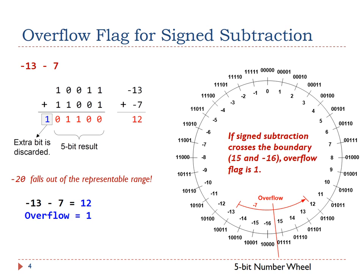As explained in the previous slide, adding two numbers of the same sign must produce a result of the same sign. Otherwise, overflow has happened, indicating the result has fallen out of the representable range.